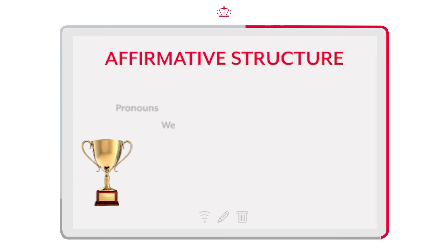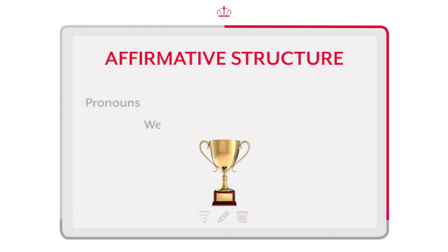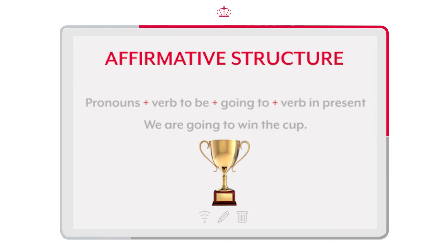As usual, first we have the pronouns. Then we add the verb 'to be' in its present form, followed by 'going to', and then the verb. Iniciamos con los pronombres. Después agregamos el verbo 'to be' en presente, seguido del 'going to' y el verbo.